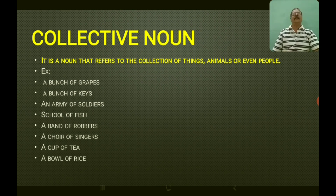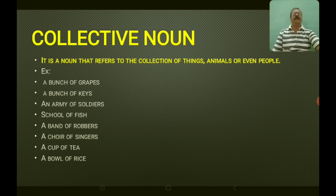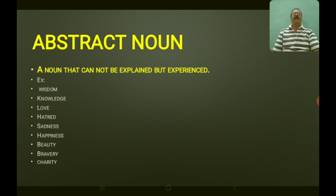The third type is collective noun — a noun that refers to a collection of things, animals, or people. Examples: a bunch of grapes, a bunch of keys, an army of soldiers, a school of fish, a band of robbers, a choir of singers, a cup of tea, a bowl of rice. These are all called collective nouns — they denote a group.